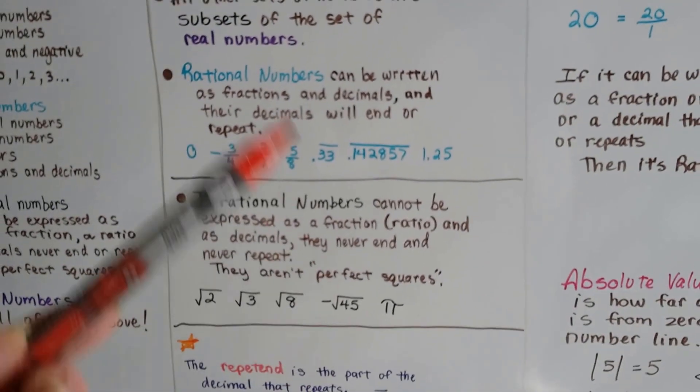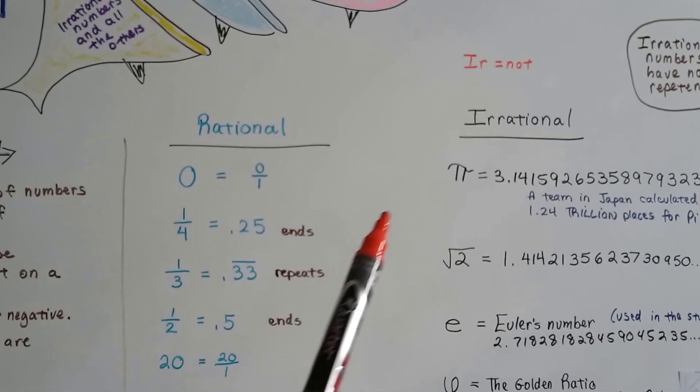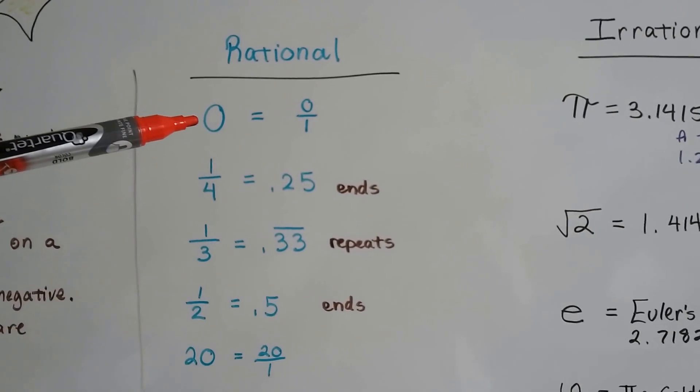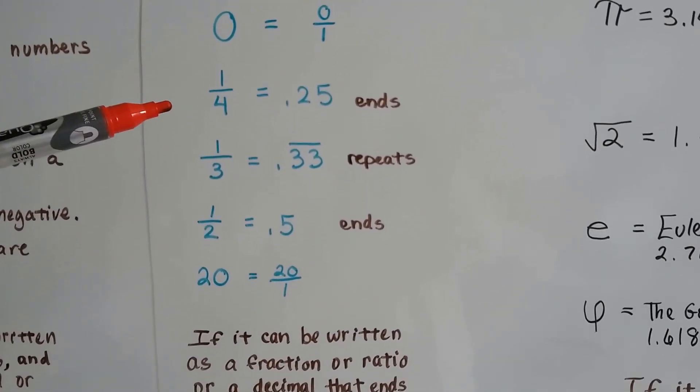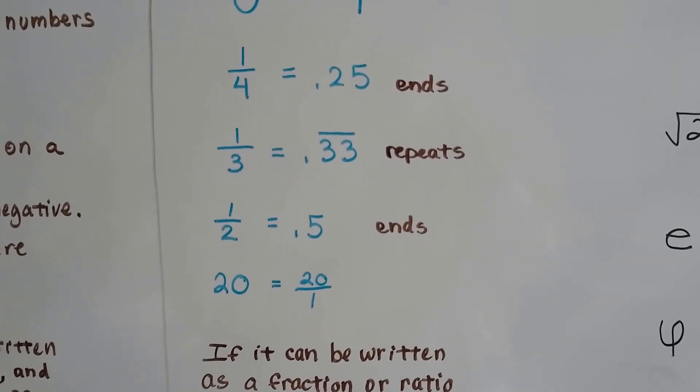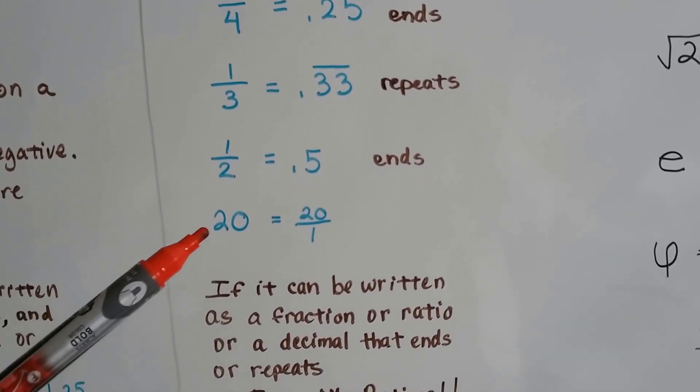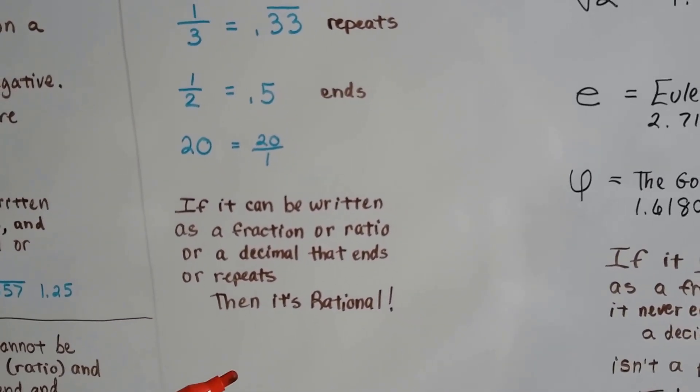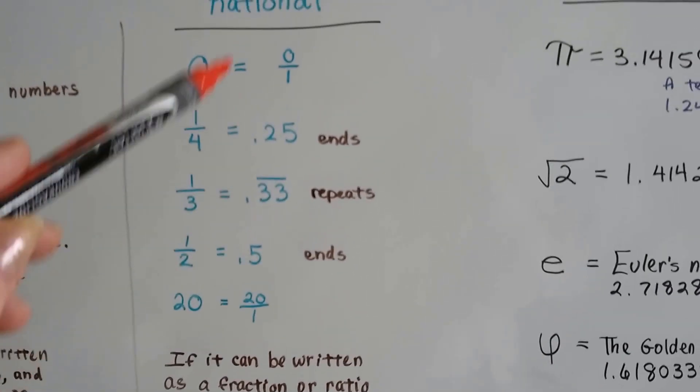If it's got a repetend, it's rational. Here's rational versus irrational. The prefix ir- means not, so it's not rational. We can even write zero as a fraction: zero over one. One-fourth is 0.25—that decimal ends. One-third is 0.33—it repeats. A half can be written as 0.5—that ends. Even the whole number 20 can be written as 20 over 1 as a fraction. If it can be written as a fraction or ratio, or as a decimal that ends or repeats, then it's rational.